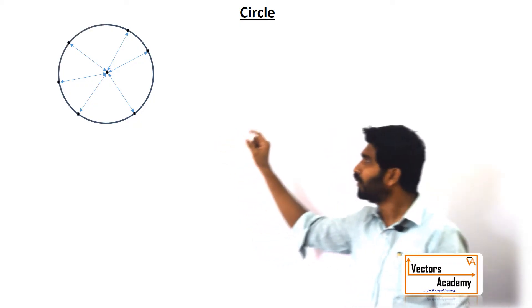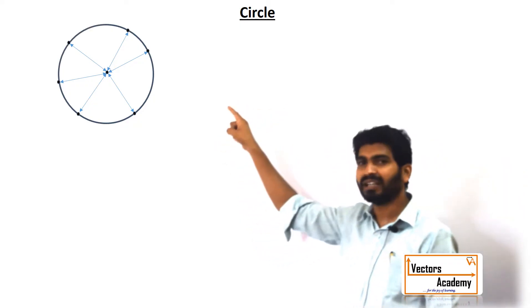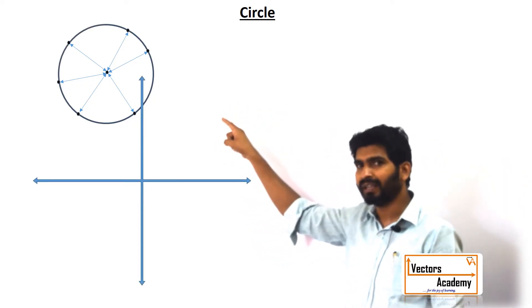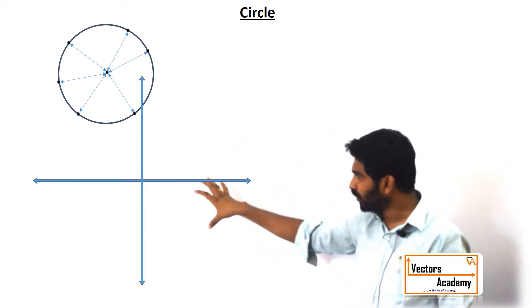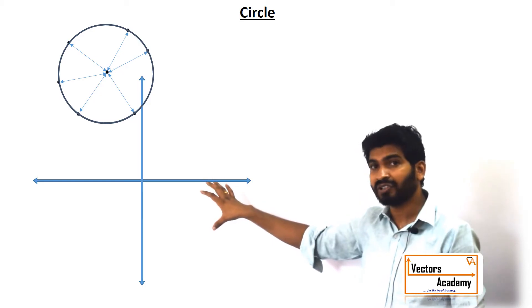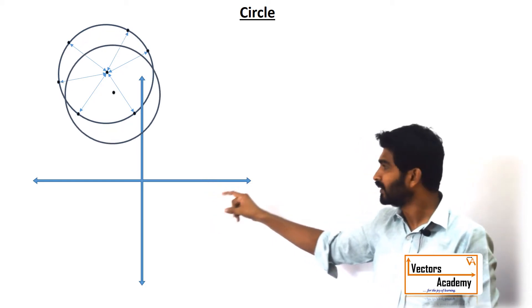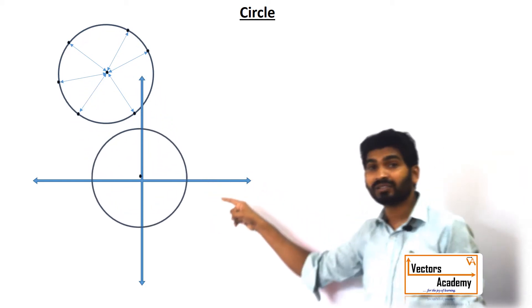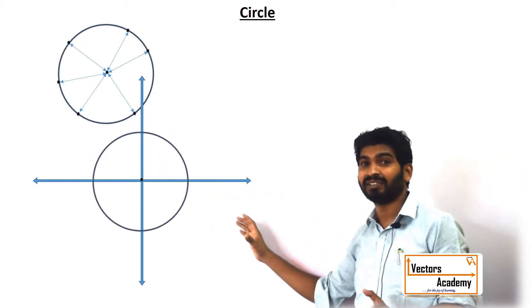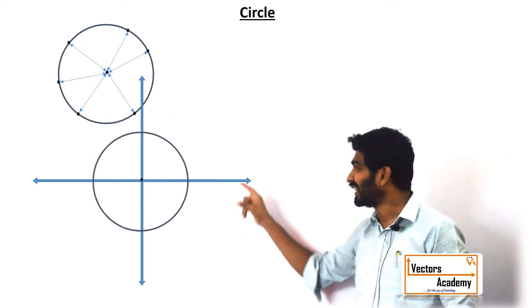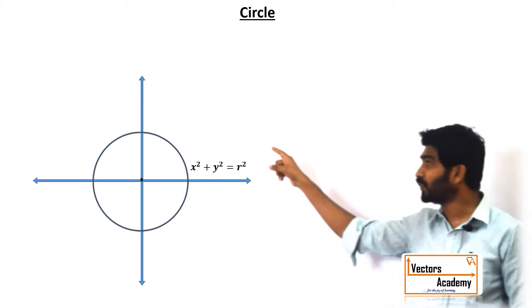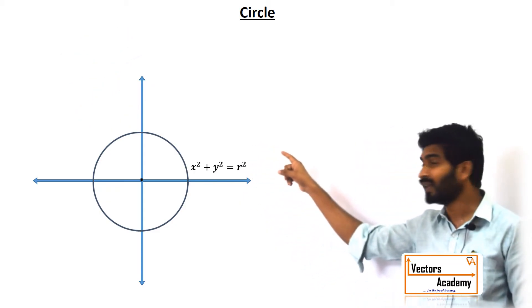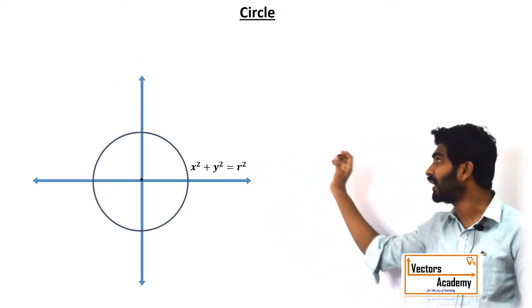Now if this center is placed on the origin of the Cartesian plane, the circle is called a standard circle and the equation of the standard circle is x² + y² = r².